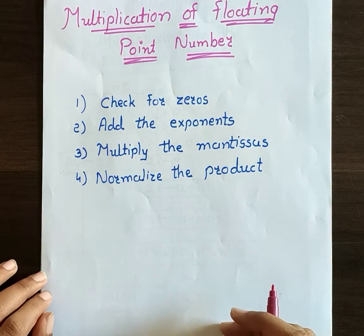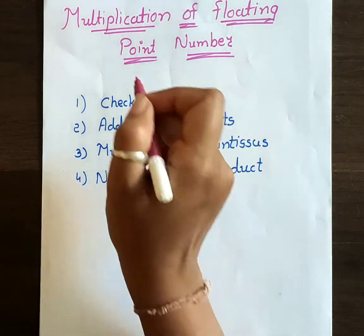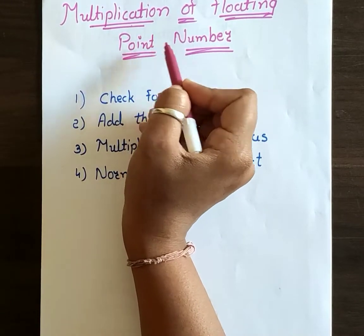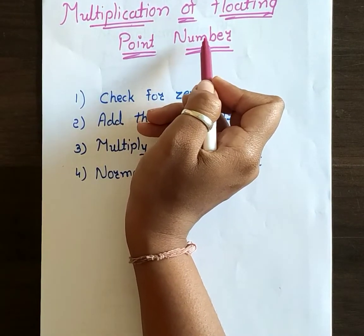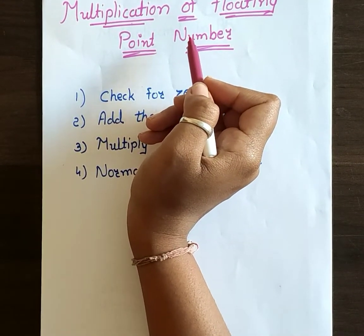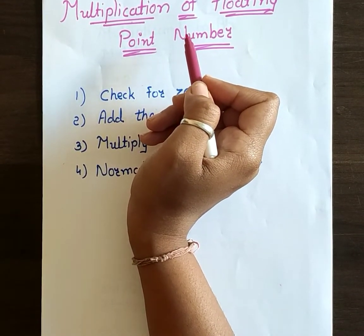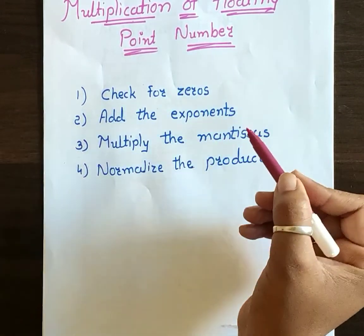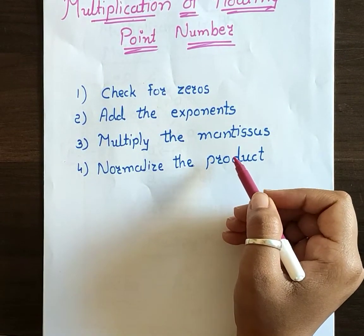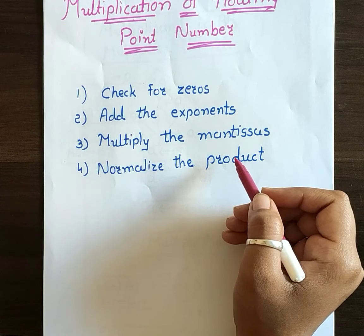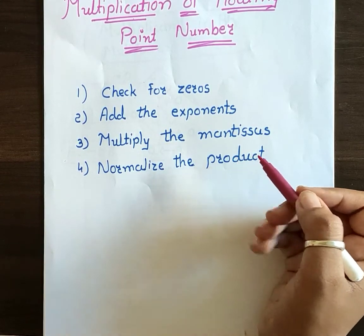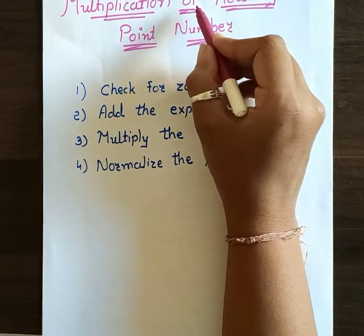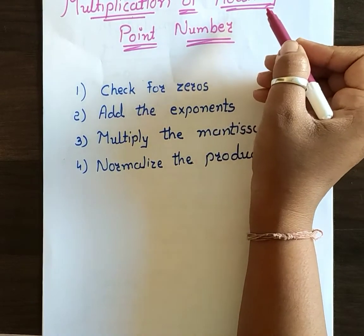Hello everyone. In this video lecture we are going to study about multiplication of floating point numbers. In the last video lecture we have done Booth's multiplication algorithm, in which multiplication of integer numbers was done. So in this we are going to multiply two floating point numbers.